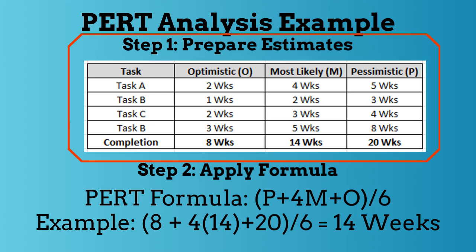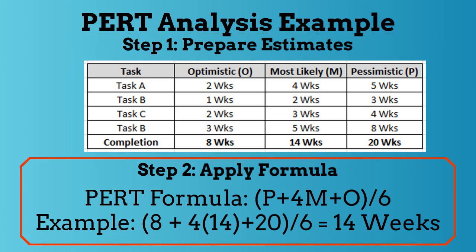There are four tasks on the critical path on this project. Once these estimates are developed, you can go to Step 2, where you add the total estimate for optimistic, most likely, and pessimistic to the PERT formula. The formula will then calculate the minimum time required for the project. The minimum time for this project is 14 weeks.